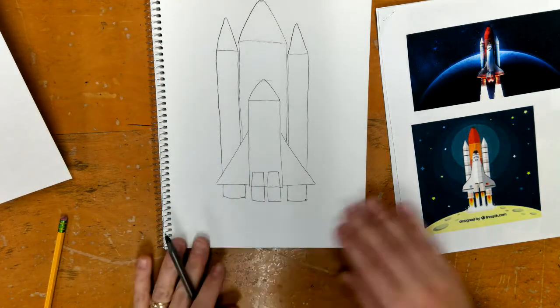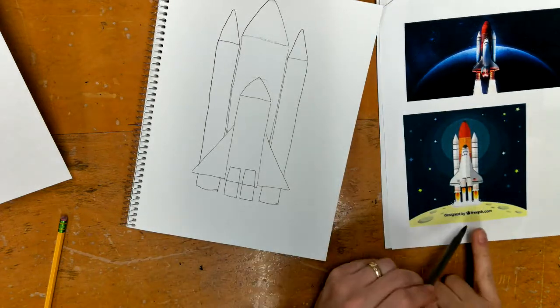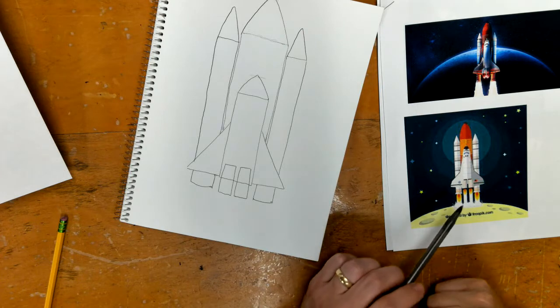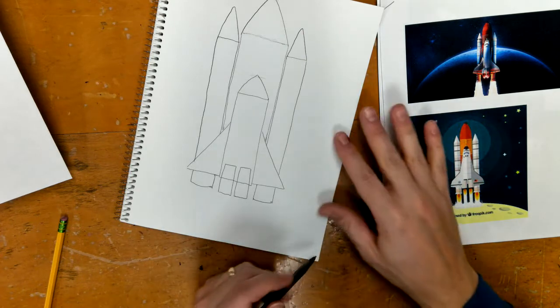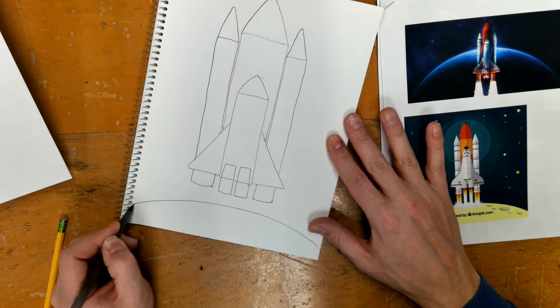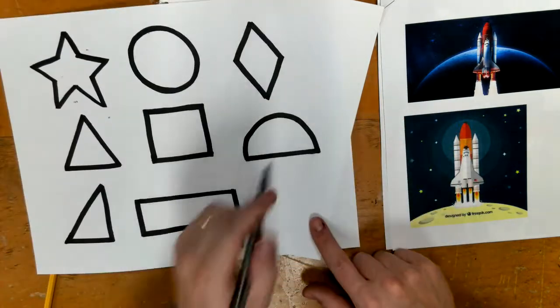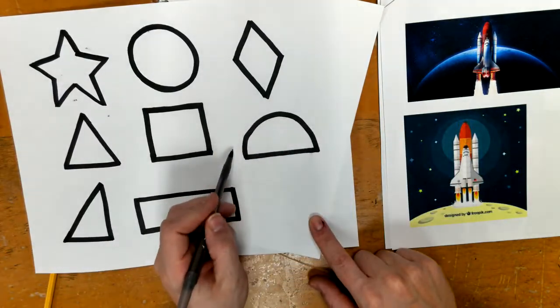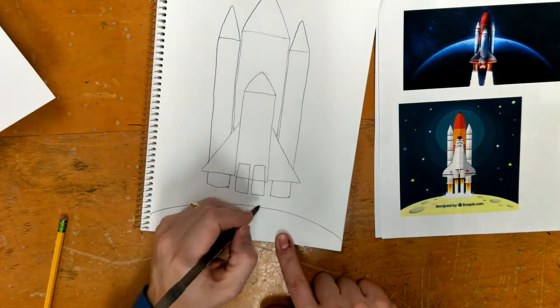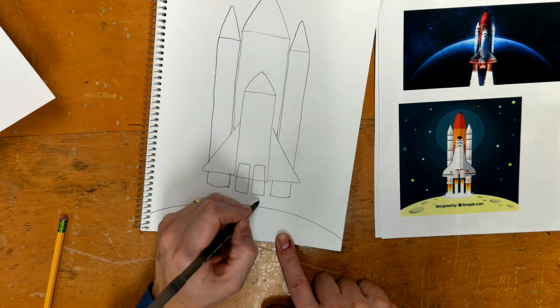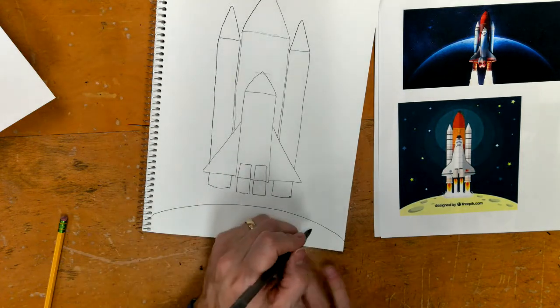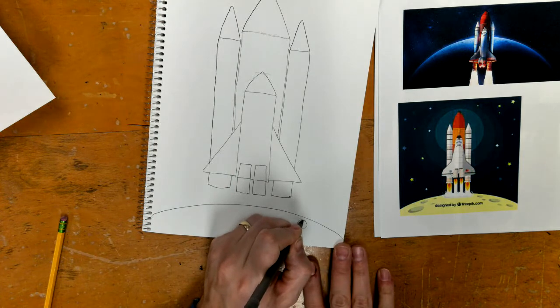And then I'm going to put that pointy triangle on the side. Okay, now this picture I really like because it also has, it's almost like it's taking off of the moon, and I kind of like that shape, and so I can add that because it's a half circle. All right, so I can add that, and then that flame we can add later, and I'll talk about that next class. But I also like all the little craters made out of circles.